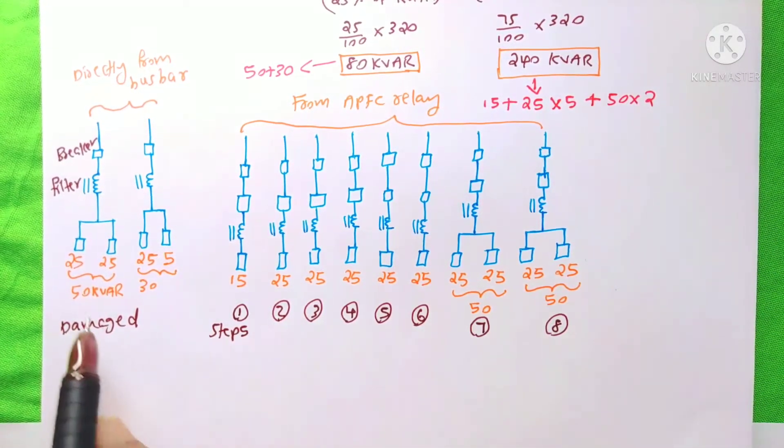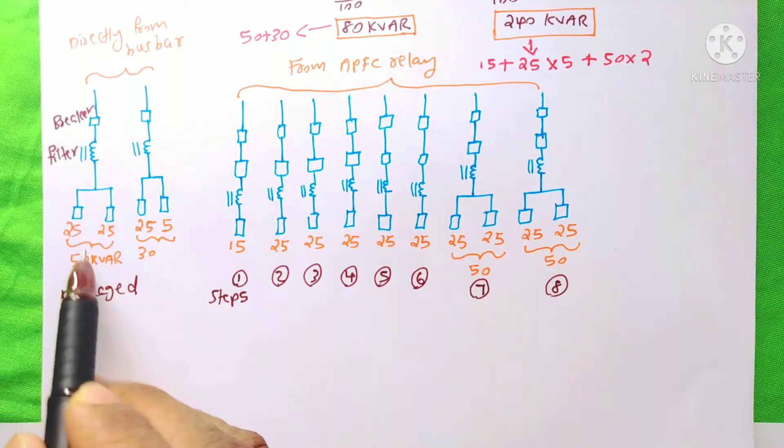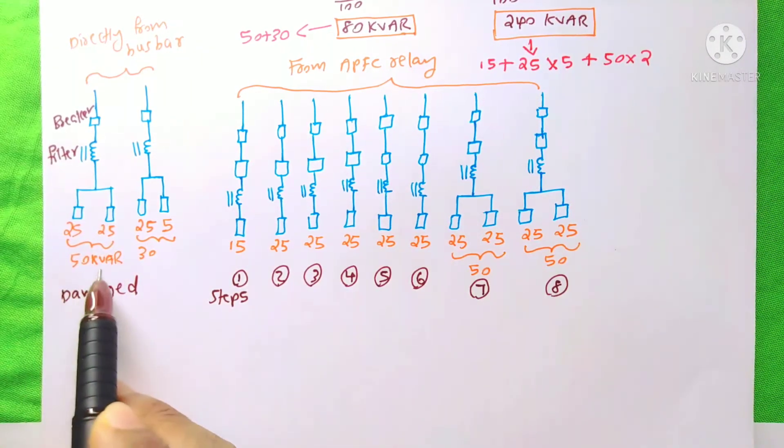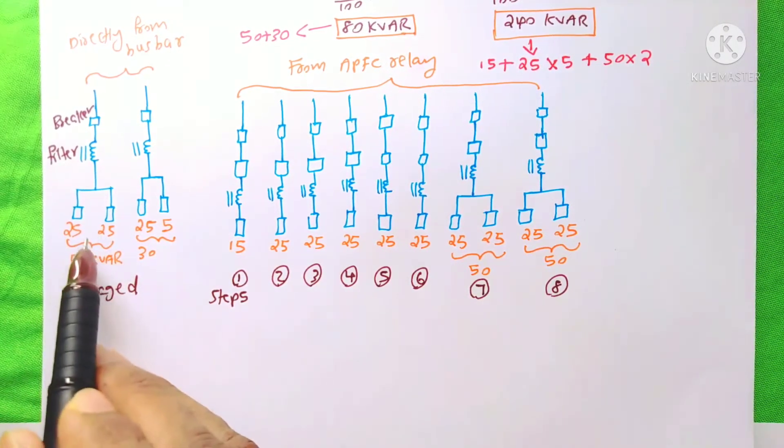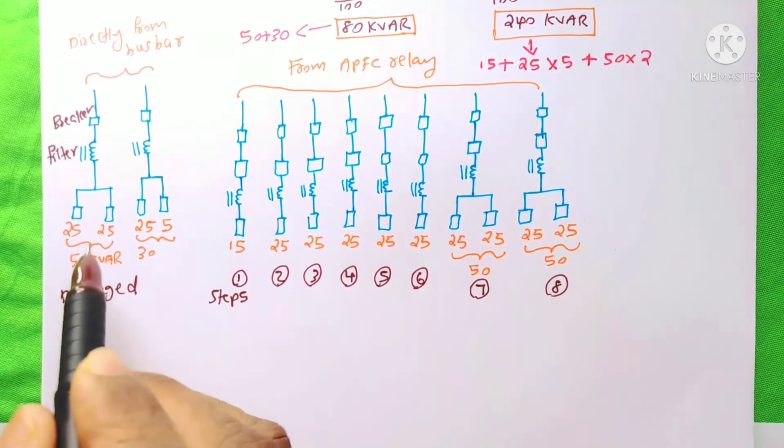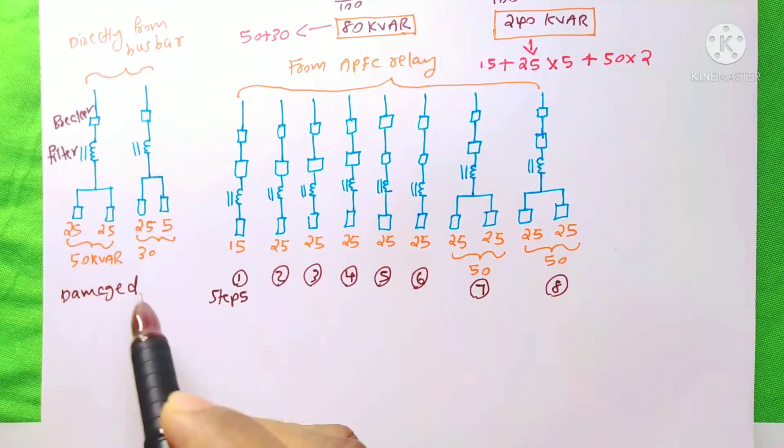And the next thing is, you might be thinking that, why I have divided this 50 kVAR again to 2 25 kVAR. The reason is same as what I have said on the breaker case.